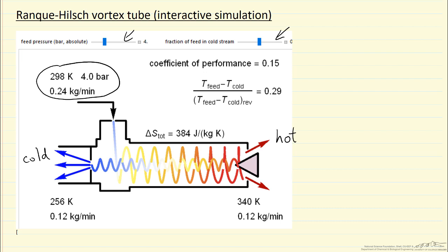Now for this particular setting of a feed fraction of 0.5 in the cold stream and of course 0.5 in the hot stream, we can see easily that for a constant heat capacity, we satisfy the first law. Half the gas undergoes a temperature decrease of 42 degrees Kelvin, half the gas undergoes a temperature increase of 42 degrees Kelvin, so the first law is satisfied.